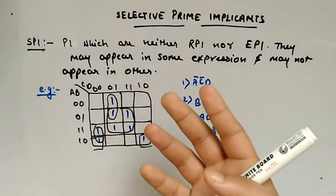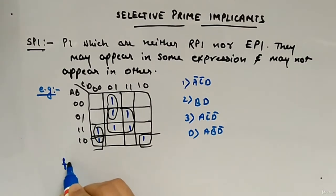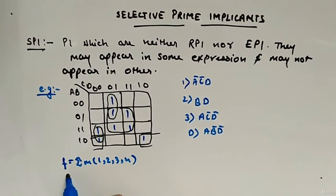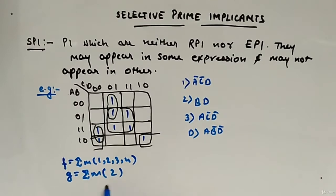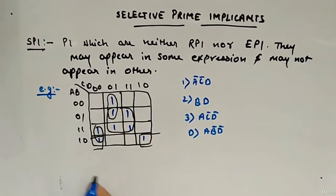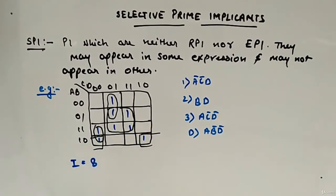So the first thing we will start with is implicants. Implicants, if you remember, are the subset of the main function. So if you define G as just one single min term, then G will also be called an implicant of F. Same thing we apply here — how many min terms are there? Just count. One, two, three, four, five, six, seven, eight. So implicants are eight.